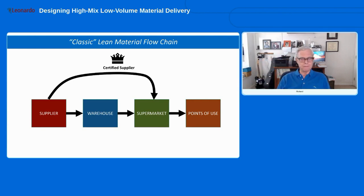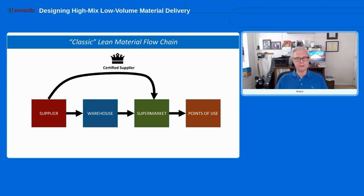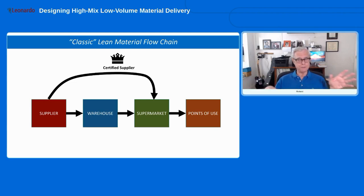Let's look at the five strategies. Here's what I'm calling the classic lean material flow chain — the classic material delivery strategy as a baseline. We have outside suppliers delivering — classically, not to the factory floor but to a warehouse, especially in larger quantities. From the warehouse, we deliver to what's called a supermarket, or sometimes just a 'market.' The supermarket is an inventory location on the factory floor inside the factory, containing an assortment of parts used to feed the actual points of use — the workstations where people do the work.